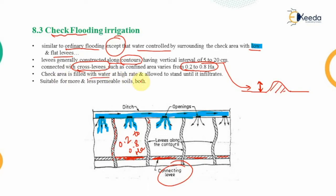The check area is filled with water at a high rate and the water is allowed to stand until it infiltrates. Once the water enters the field, the supply is cut off and the water stands until it infiltrates into the soil. This method is suitable for both more permeable and less permeable soils — for more permeable soil we can increase the supply rate, and for less permeable soil we allow enough time for infiltration.